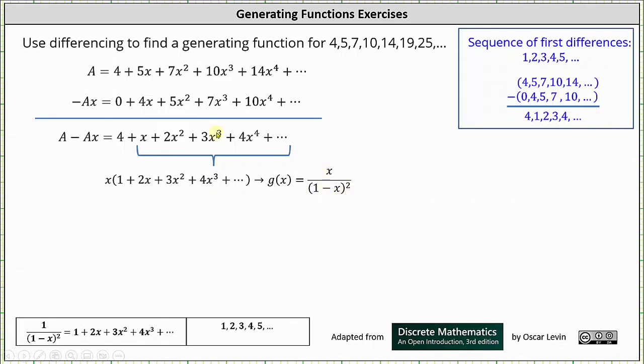Now we can replace the infinite series with g of x. This gives us A minus Ax equals 4 plus x divided by the square of 1 minus x. And now we solve for A to determine the generating function for the original given sequence.